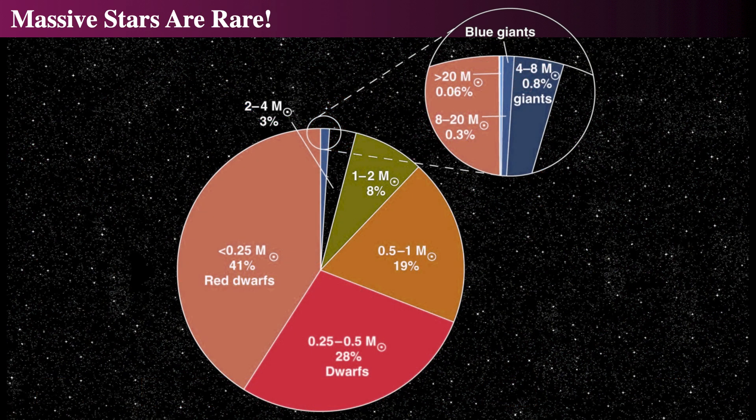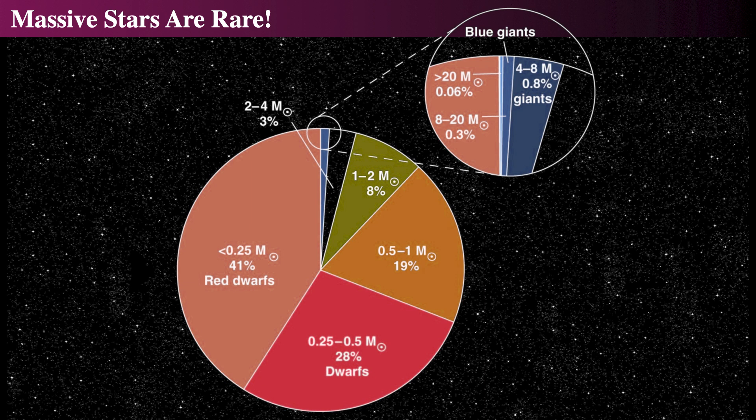Low-mass stars are made in huge quantities in these clouds and form clusters of stars. Among the teeming population of low-mass stars, there are higher-mass stars. But they are rare, and become rarer with increasing mass.